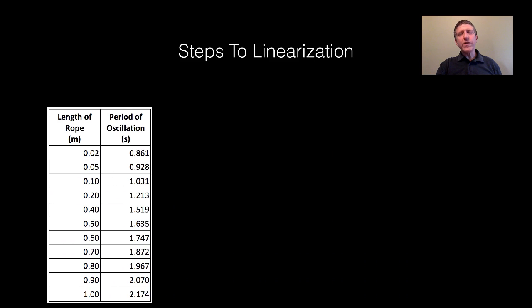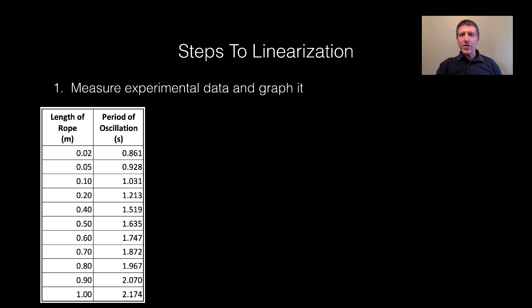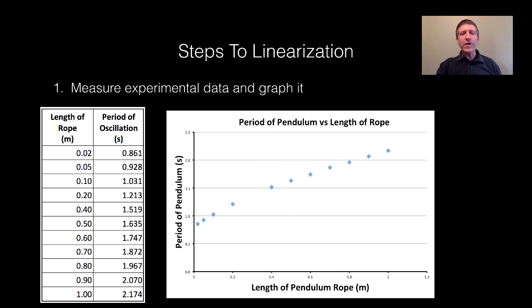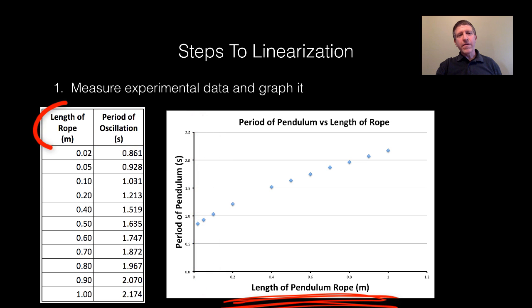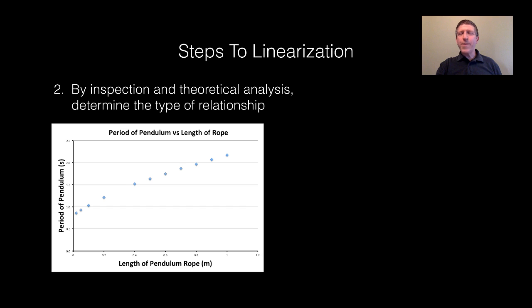So here are the steps to linearization. You measure the experimental data and graph it. I've already measured that experimental data that I showed you right here. And all I did was I graphed on the vertical axis, my dependent variable is the period of oscillation. On the horizontal axis, the independent variable was the length of the rope. So here's my graph, the period of the pendulum in seconds versus the length of the pendulum rope in meters. Now the next step, once we've got that, is to, by inspection, and importantly, by using theoretical analysis, determine the type of relationship.